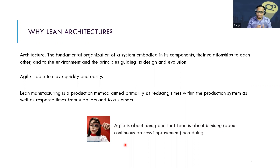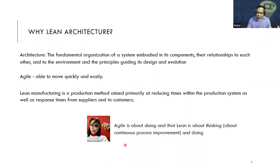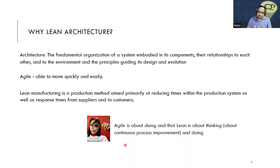Let's start with the definition of architecture, which talks about the fundamental organization of the system within its components and how they react. Every company, every application, every solution has multiple components and the way they talk to each other forms the architecture. A simple example: a car has wheels connected to the axle connected to the engine - all of this comes together for the car to move forward. If this doesn't work seamlessly, problems start. Agile, on the other hand, talks about the ability to move quickly and easily.